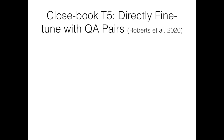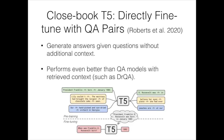All previous methods use prompts to probe language models. In the paper "Closed-Book T5", they directly fine-tune the T5 model — a sequence-to-sequence model — to generate the answer given the question, with no additional context. For example, given the question "when was Franklin born?", the model generates "1882." Because no additional context is provided, the language model parameters must contain relevant knowledge. This paper demonstrates that the closed-book T5 model can even outperform QA models with retrieved context, such as the DrQA model.